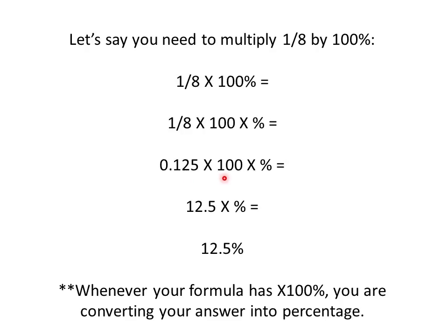We're going to multiply it times 100 times the percent symbol. So 0.125 times 100 is 12.5. We still need to multiply it times that percent symbol. Our final answer is 12.5 percent. So basically, you've converted 1/8 into a percentage, and we know that 1/8 equals 12.5 percent.